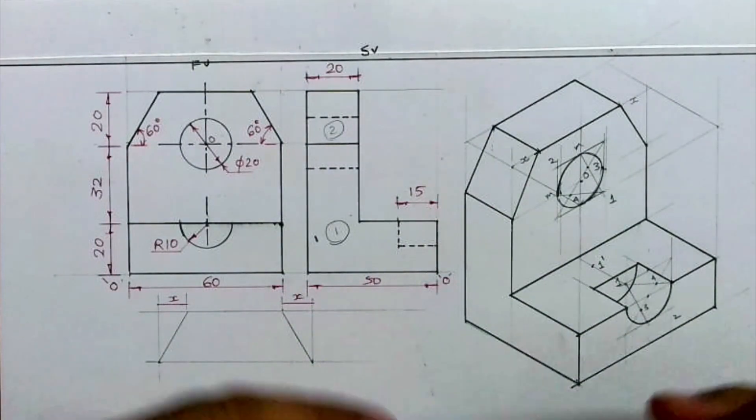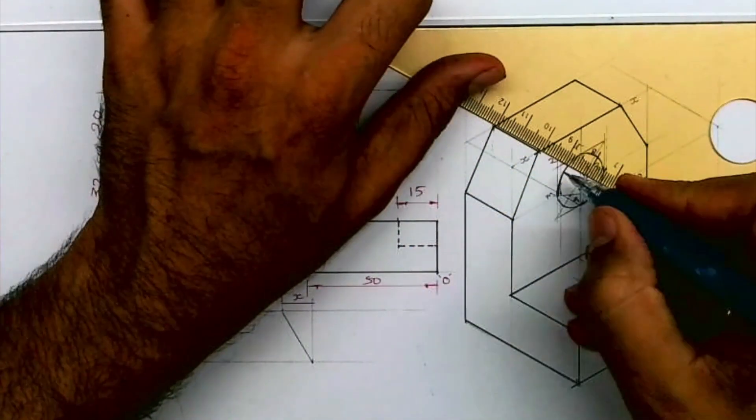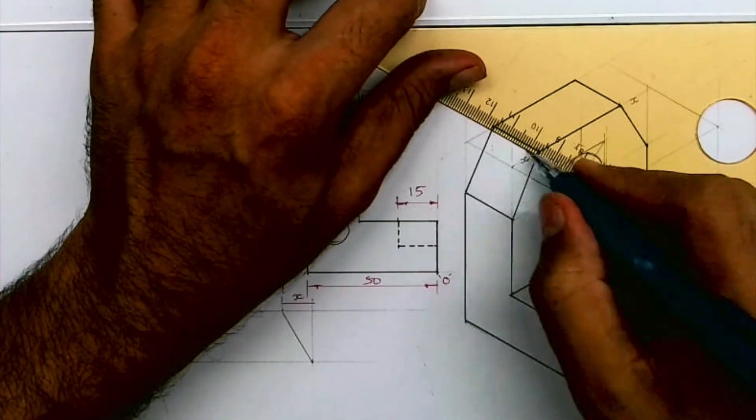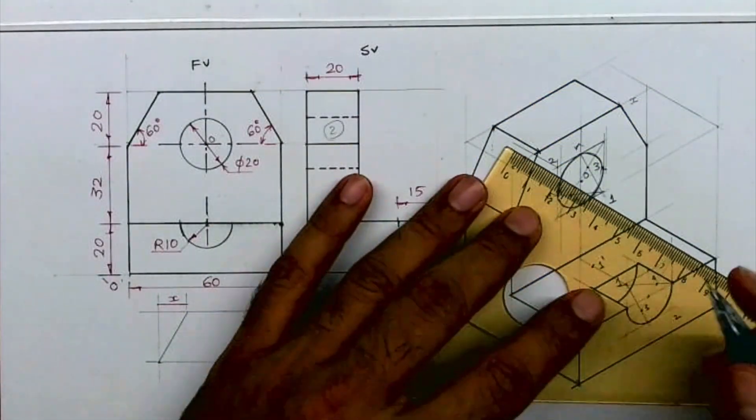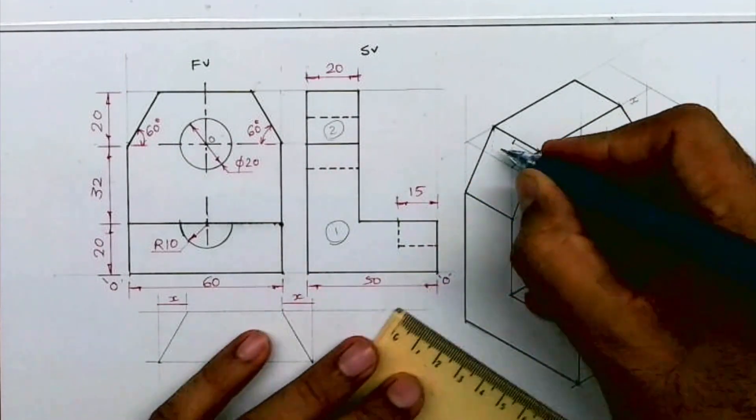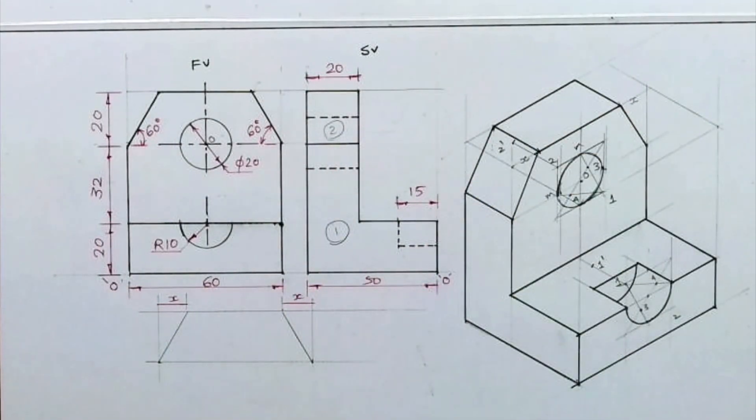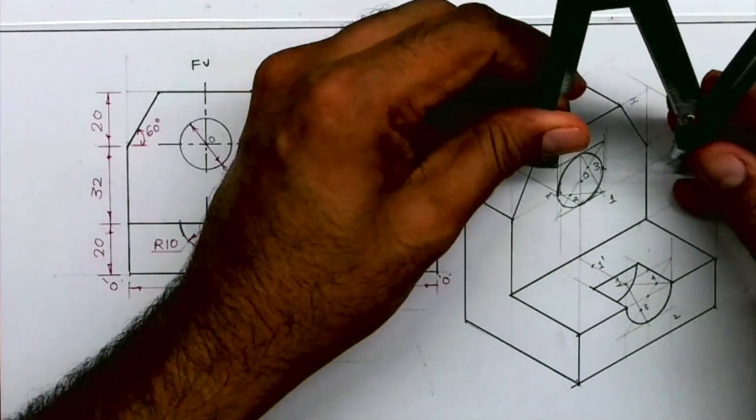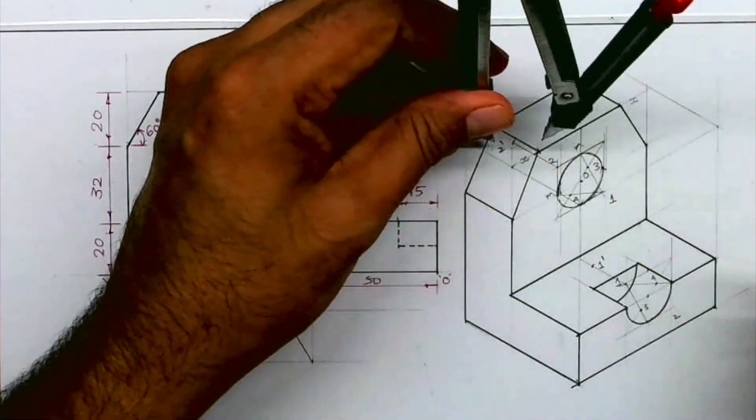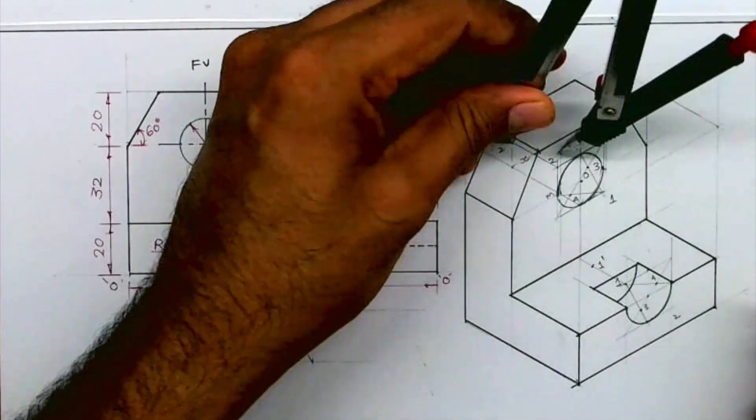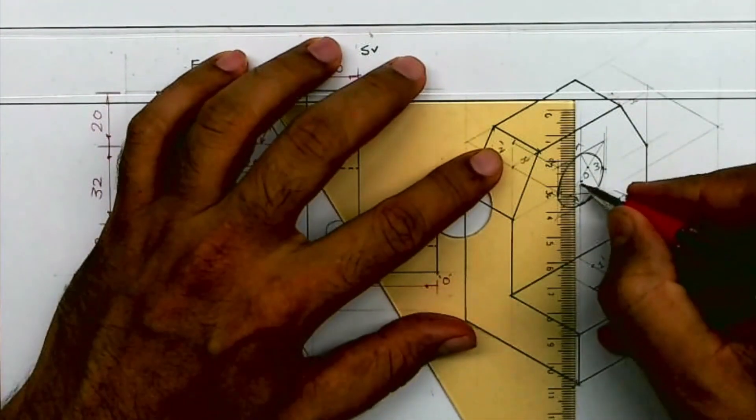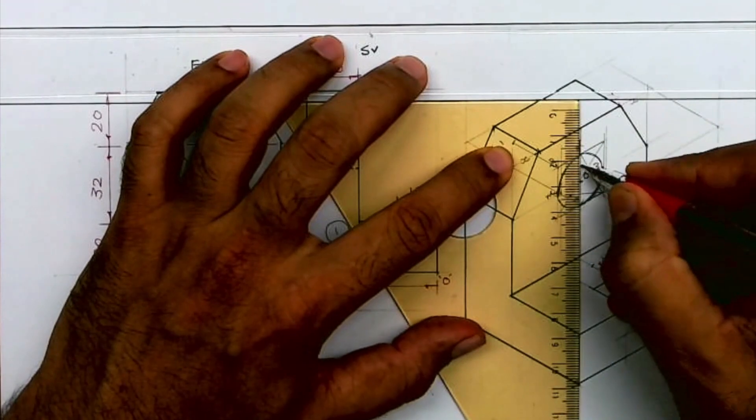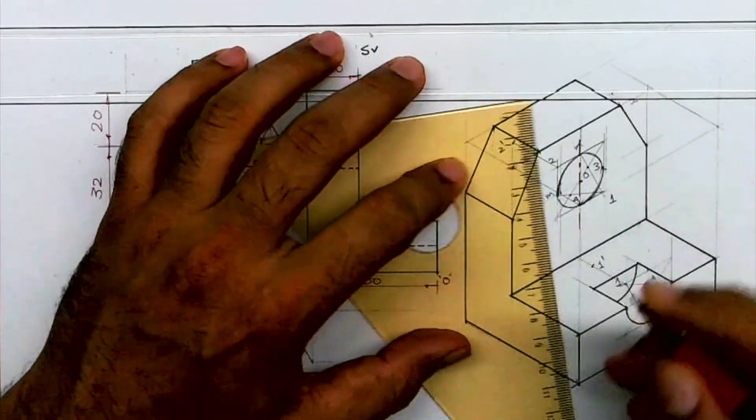So this way we are done with the circle. Now if I want to check whether I can see the behind portion of the circle or no, so I will take width, how much is the width? 20. So I will take 20 behind. This will be point two dash. Now take radius two to m and I will check. See, it is not coming, we can't see. So we won't be showing the depth of the circle. So I hope all of you understood this sum, thank you.